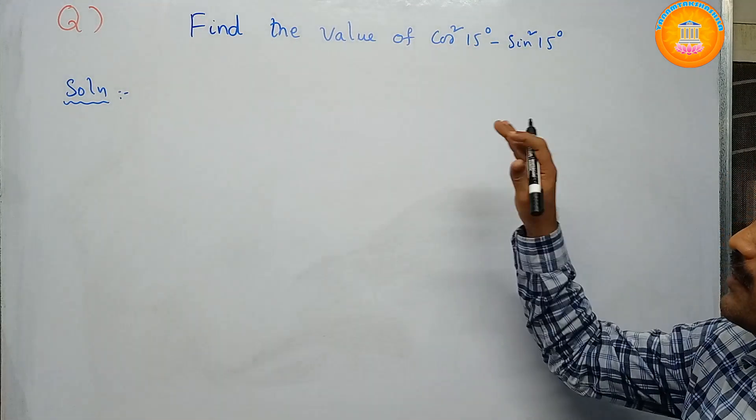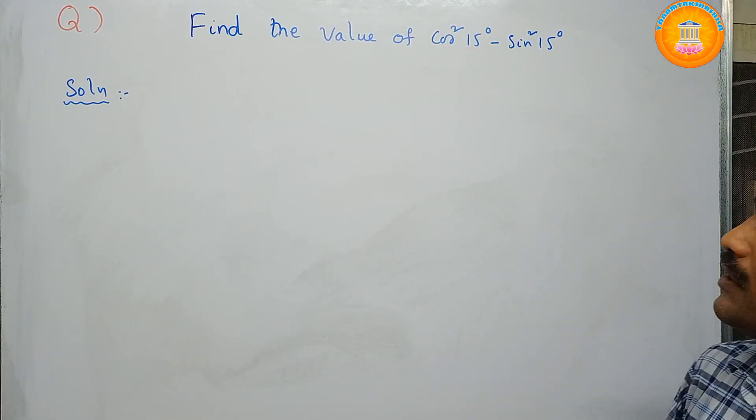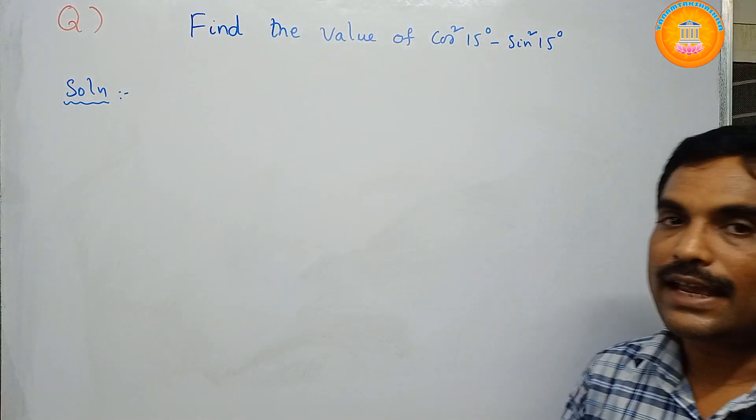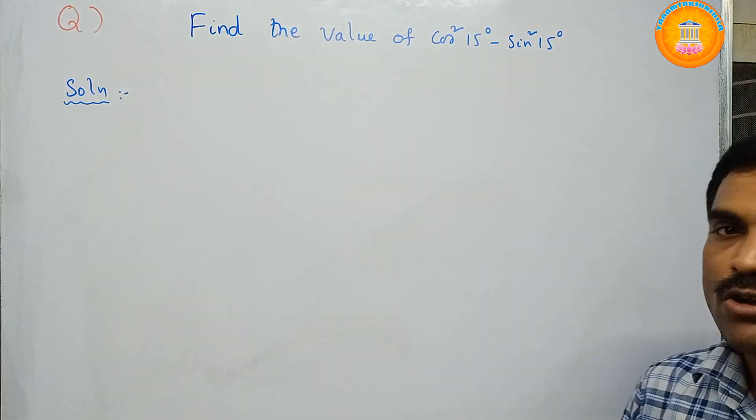If you observe this problem, cos²15° - sin²15° is of the form cos²a - sin²a, because here the angle a is 15. For this, you need to use the trigonometric formula.